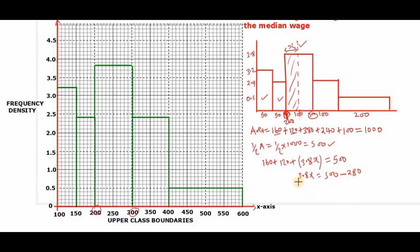And that means dividing both sides by 3.8, we'll have x is equal to, so here we have 220 over 3.8. So that is 57.89.